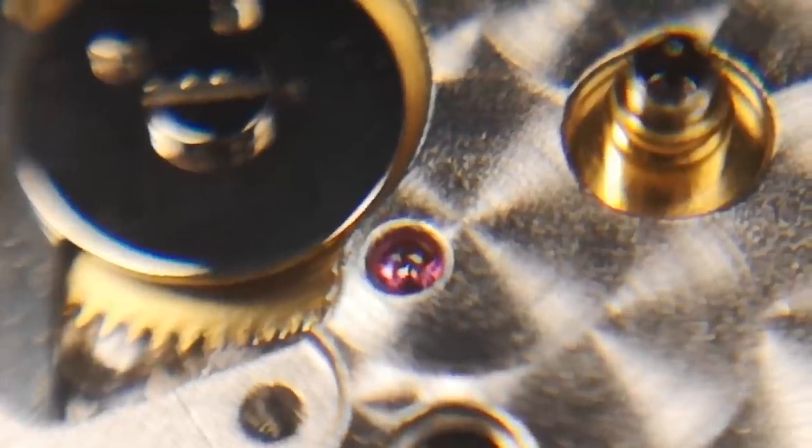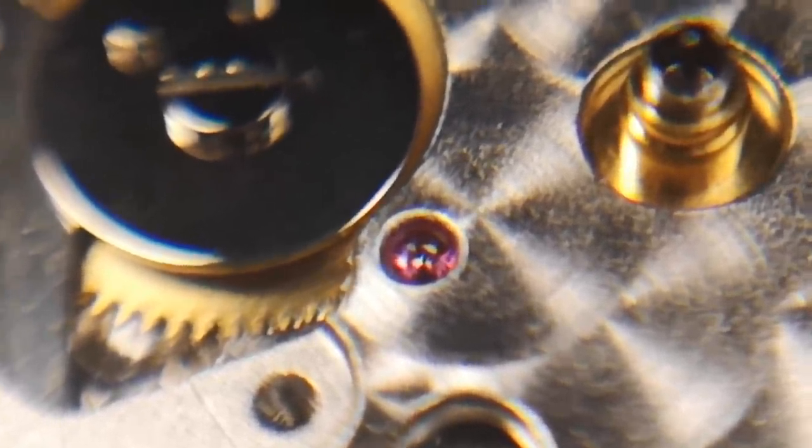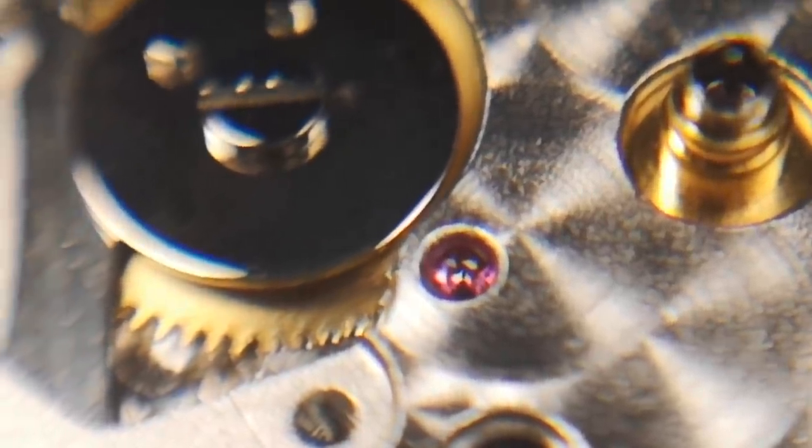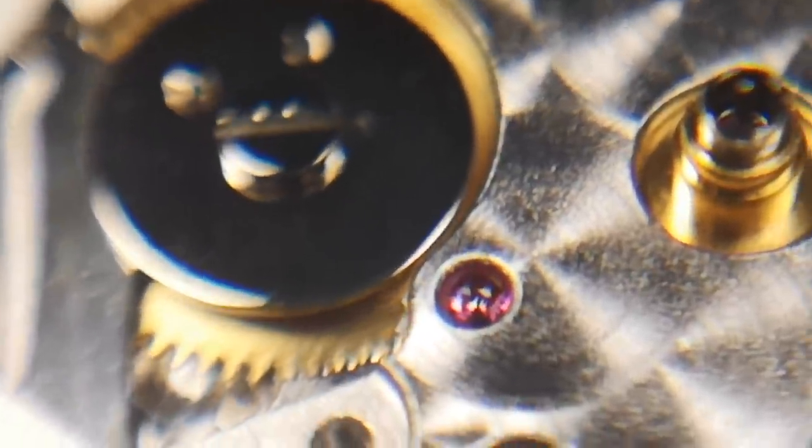But that's all looking good. We're going to secure that down now with the four blued screws, and then we can replace the calendar wheel and then we're good to turn the watch over and get into the escapement.